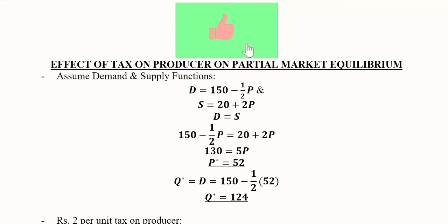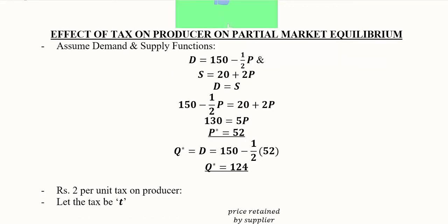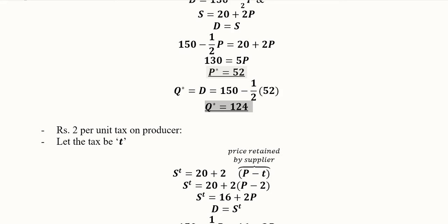After conducting the analysis on the basis of shifts in the demand and supply curves, we will now consider the effect of taxes on the producer and then the effect of tax on the consumer. We have the demand and supply functions and we can do this partial market equilibrium analysis in its original form — the equality of the two demand and supply functions — giving us the equilibrium price and equilibrium output.